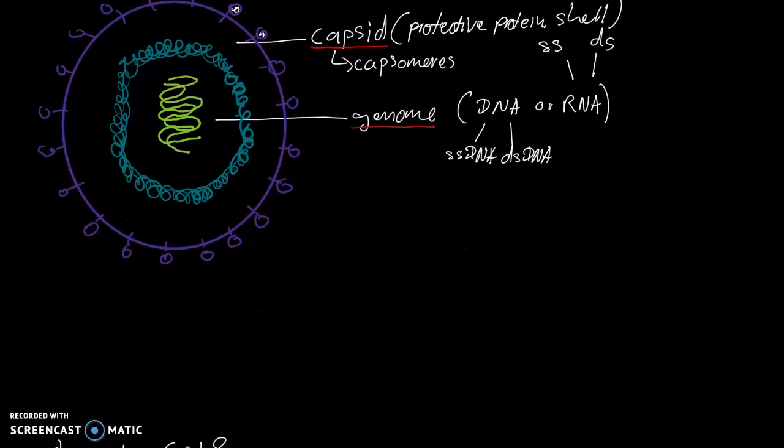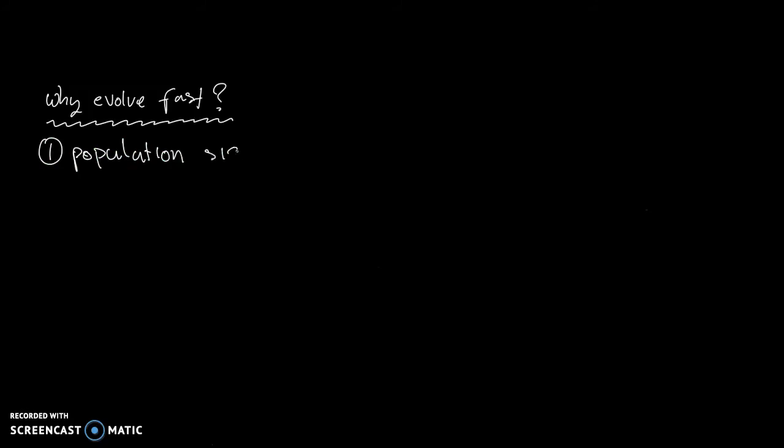Now going back to why do viruses have this amazing ability to evolve so fast? There are three factors, three main factors. And the first factor is population size. The population size of viruses is large, extremely large. In fact, it's estimated that there are 10 to the power of 31 viruses across the planet.